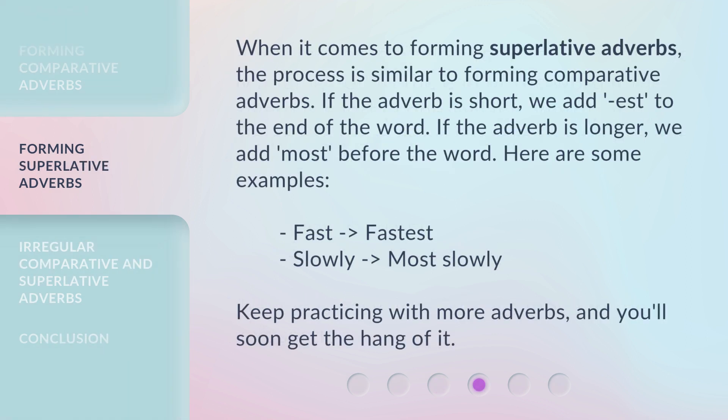When it comes to forming superlative adverbs, the process is similar to forming comparative adverbs. If the adverb is short, we add -est to the end of the word. If the adverb is longer, we add 'most' before the word. Here are some examples: fast to fastest; slowly to most slowly.